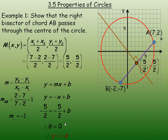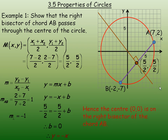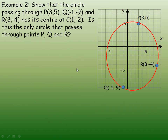Now if the y-intercept is 0, that means this line does pass through the point (0, 0), which of course is the center of the circle. So that verifies that this perpendicular bisector passes through the center. Hence the center (0, 0) is on the right bisector of the chord AB — in fact it is on the right bisector of any chord in the circle.